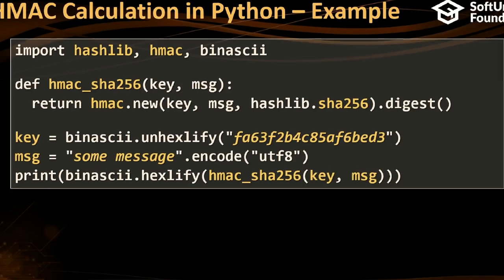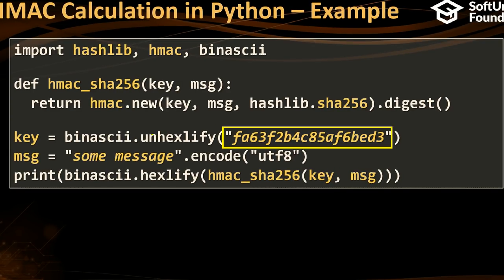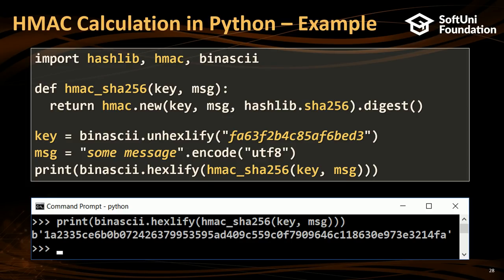With HMAC: if we have this key and we hash this message, this is some kind of combined hash. You can just concatenate the strings and calculate SHA, but HMAC works differently — with many iterations to make it more secure — and you get some result.